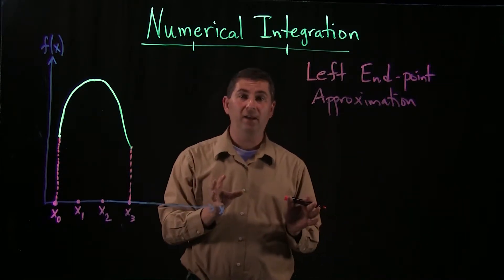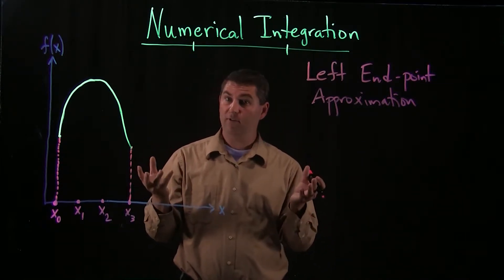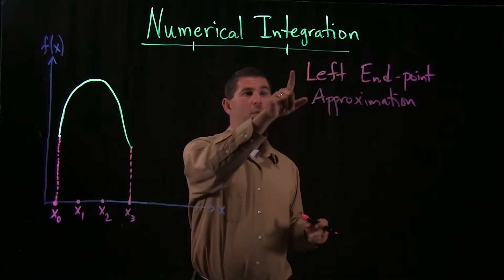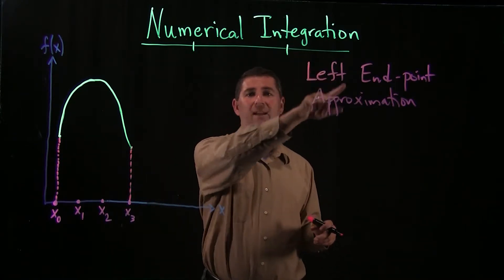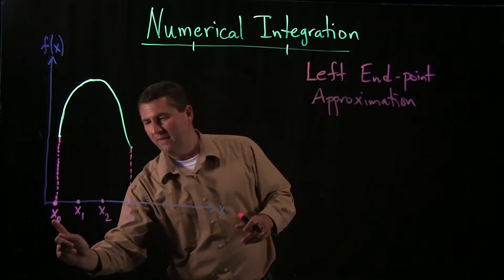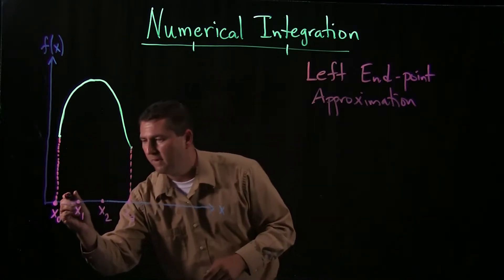One, I'm going to approximate using a specific shape, rectangles. Second, I'm going to choose the height of the rectangle based on the left endpoint of the interval. So my first interval, I'm going to look at between x0 and x1, and I'm going to build a rectangle.